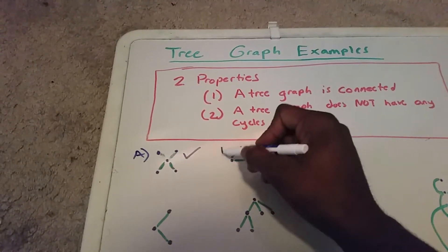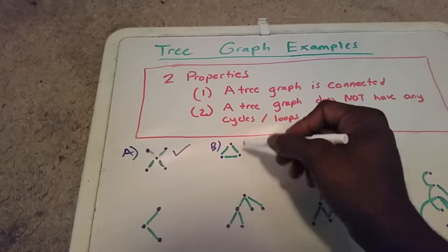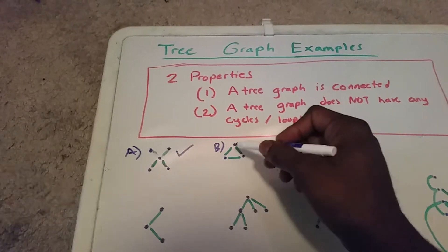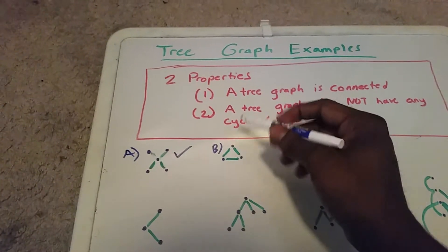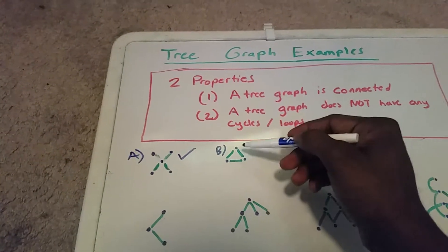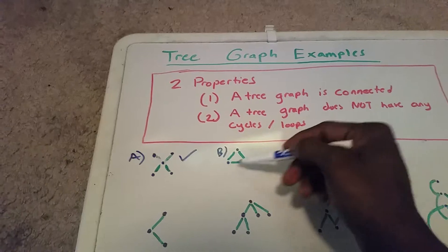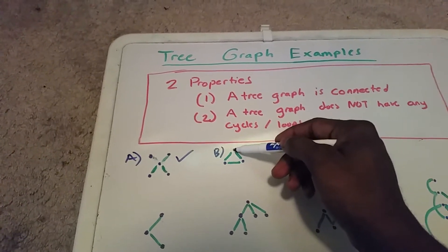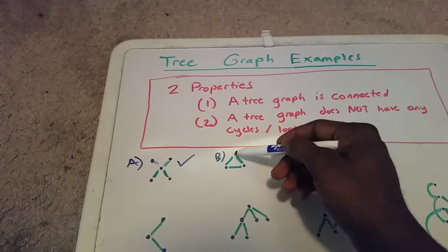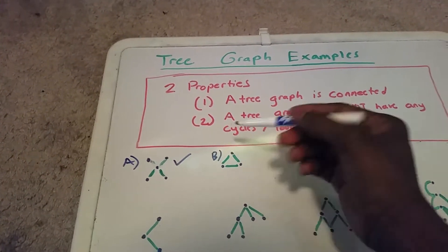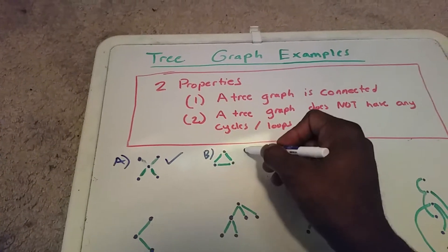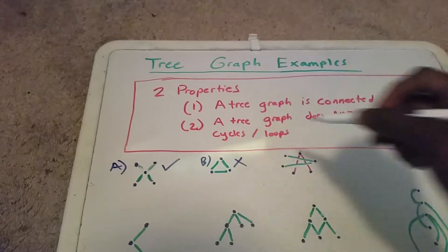Here we have another graph, and you can see that it's all connected, so it satisfies property one, but it's a cycle. I can get from this node here to this node to this node back to itself, so that's a cycle. So this is not a tree graph.